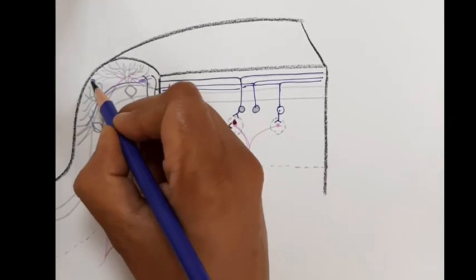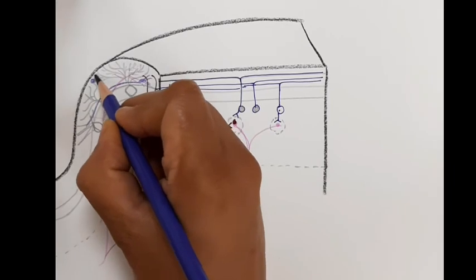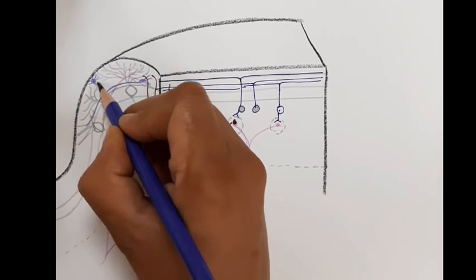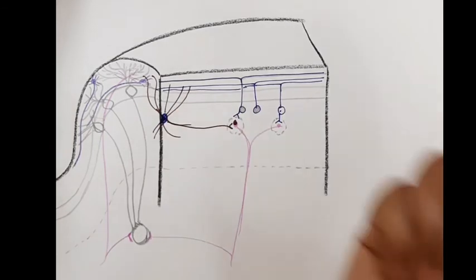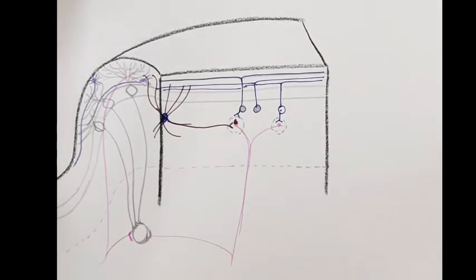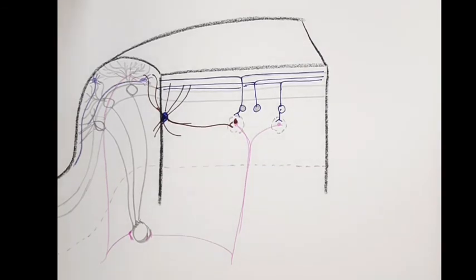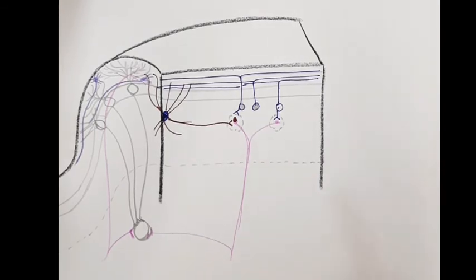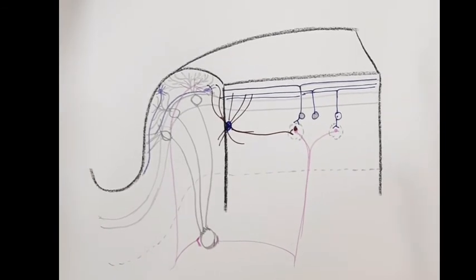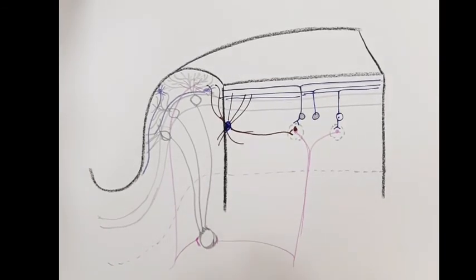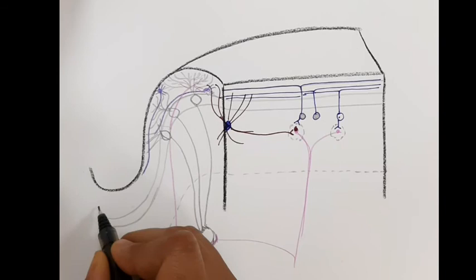The sole output from the cerebellum is through the axons of the Purkinje cells. These axons synapse with the intracerebellar nucleus, except for fibers that relay into the vestibular nuclei. All cells in the cerebellum are inhibitory except the granular cell.